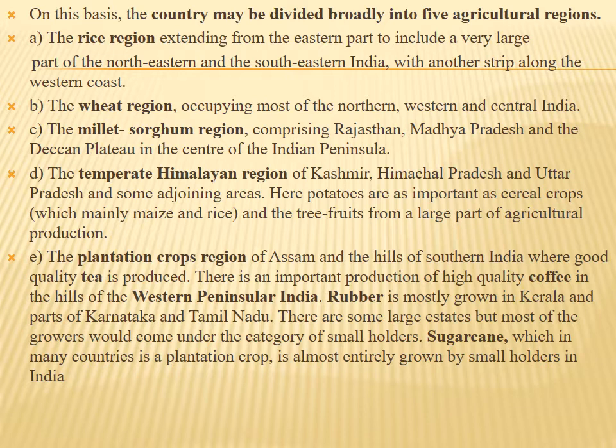The temperate Himalayas region of Kashmir, Himachal Pradesh, and Uttar Pradesh, and also some adjoining areas. Here, cereal crops — mainly maize and rice — and tree fruits form a large part of agricultural production.